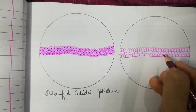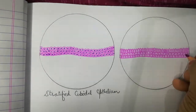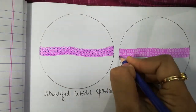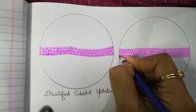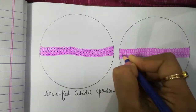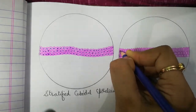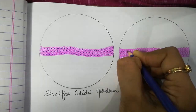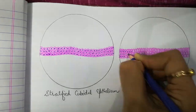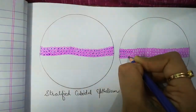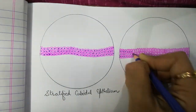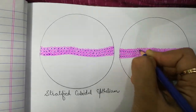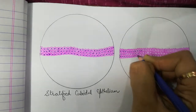We will fill the cytoplasm of each and every cell. After filling the cytoplasm, we will draw the nucleus in each and every cell. The cuboidal cells will have a rounded nucleus, and the columnar cells will have an oval nucleus, which is present in the basal half of the cell. The two layers of cuboidal cells will have rounded nucleus in the center, while in the columnar cells we have an oval shaped nucleus in the lower half.